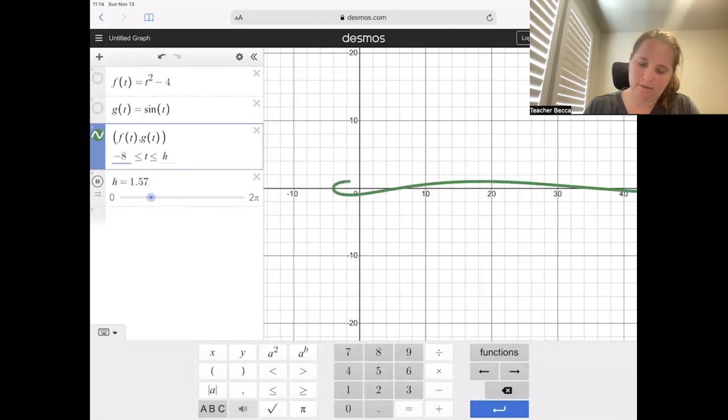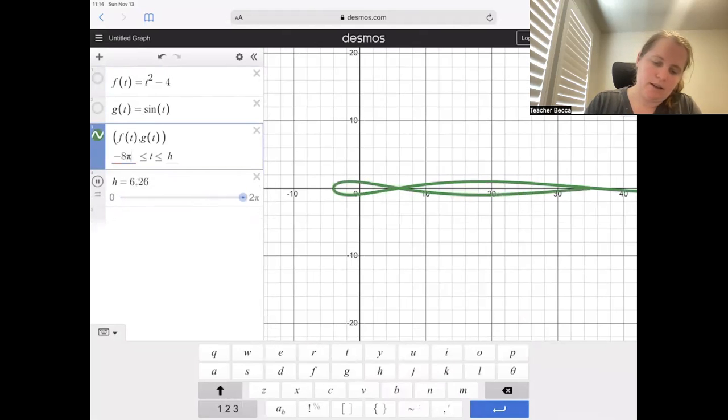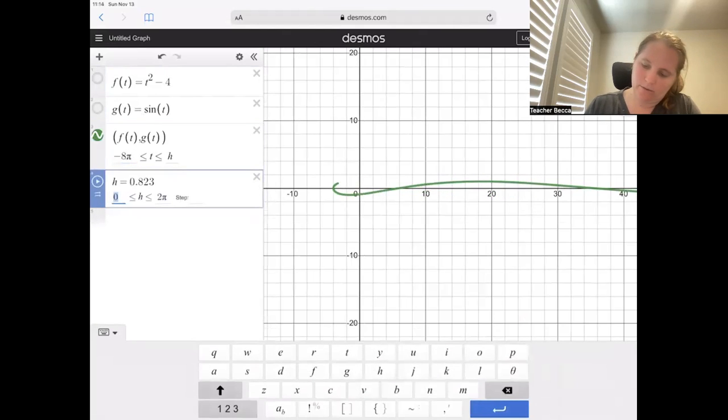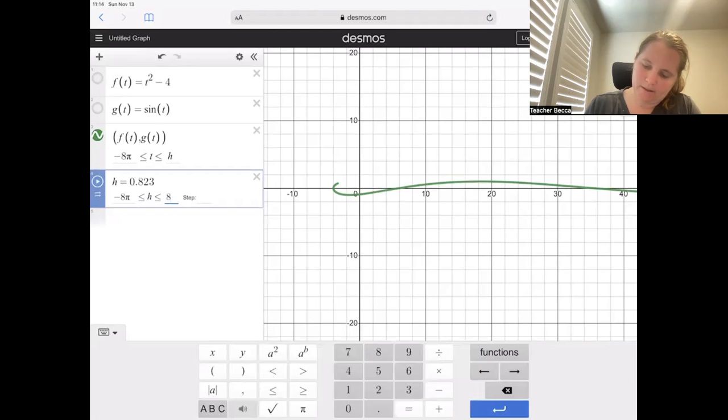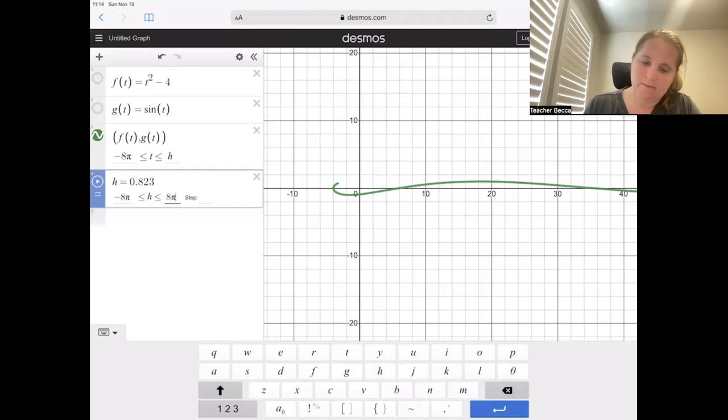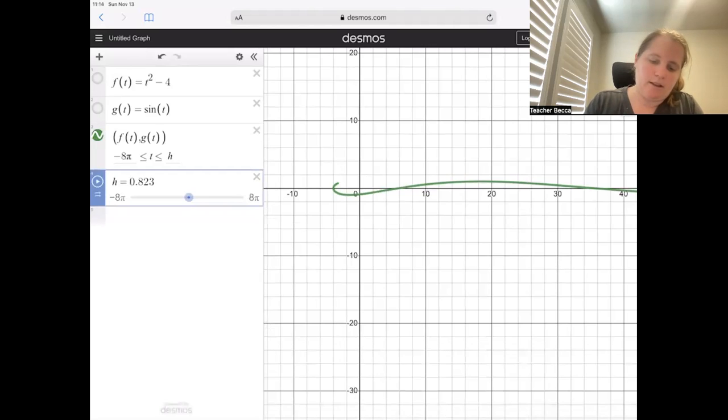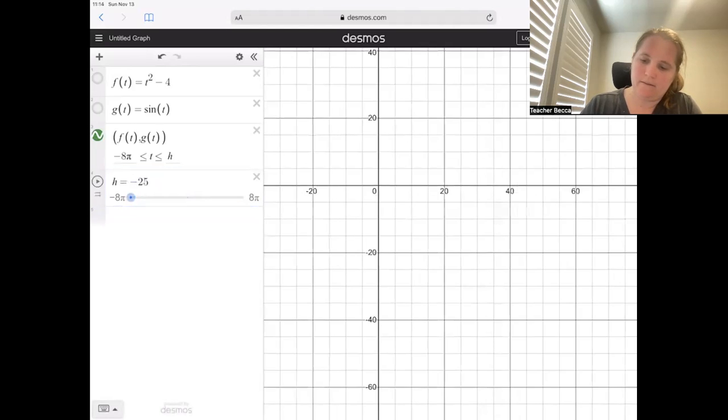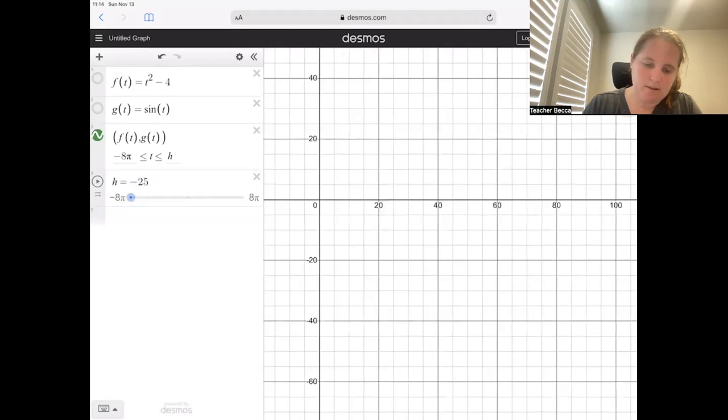So let's go from -8π to H and we'll let H run from -8π to 8π. And then if I let that play, as time passes, we can see our graph coming through. So the graph definitely crosses itself.